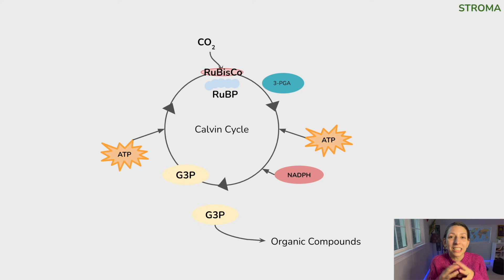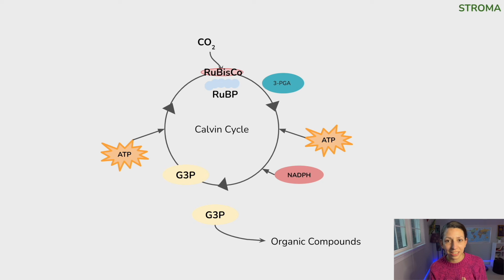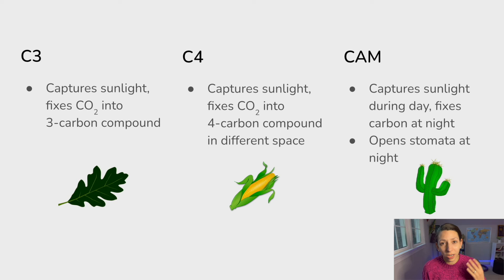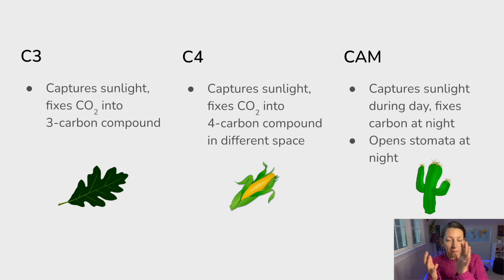Rubisco is thought to be the most populous enzyme on the entire planet because so many cells and chloroplasts are participating in photosynthesis all the time. But there is more than just one type of photosynthesis. This traditional type is actually called C3 because of that three-carbon compound generated in the first step after carbon fixation. We also have C4 and CAM photosynthesis, which are ways plants have adapted in different environments to combat inefficiencies in the process. In dry and arid environments, certain plants have adapted to do C4 photosynthesis, which fixes carbon dioxide into a four-carbon compound in a different cell type. In CAM photosynthesis, instead of a physical separation, there's a timing separation — it captures sunlight during the day but fixes carbon at night, only opening stomata for gas exchange at nighttime when water loss is limited because there's less evaporation.